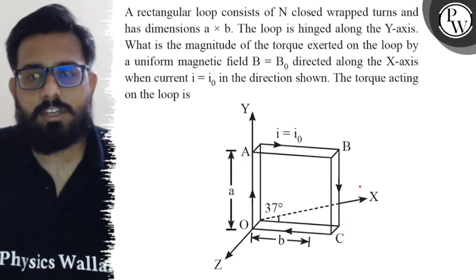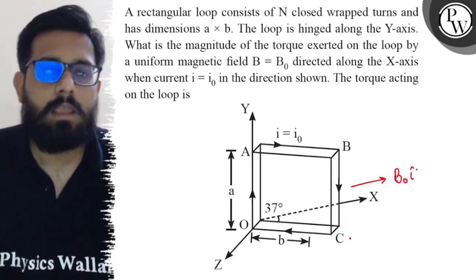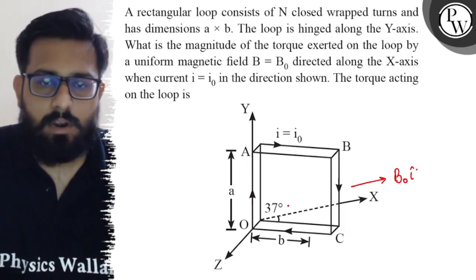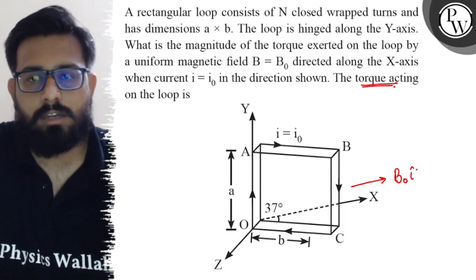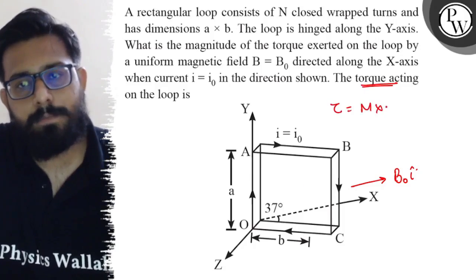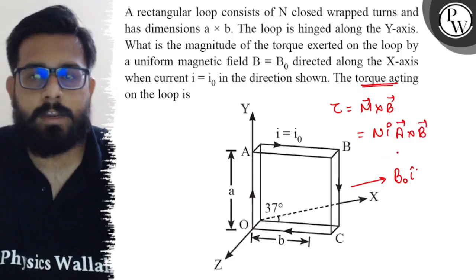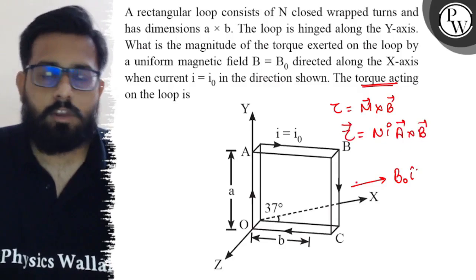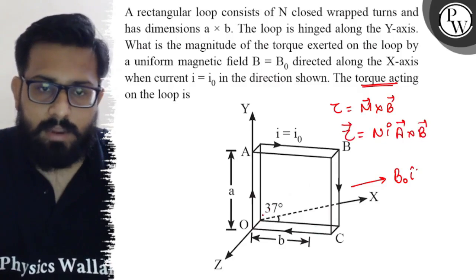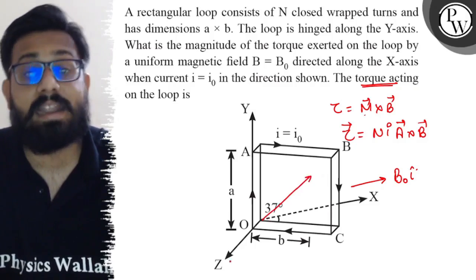As you can see here, the direction of the magnetic field is along the x-axis, so it comes out to be B0 i-cap. Now, to find the torque acting, the torque can be written as m cross B, or n·i·A-vector cross B-vector. The area vector, or magnetic moment, can be considered along the negative z-axis.